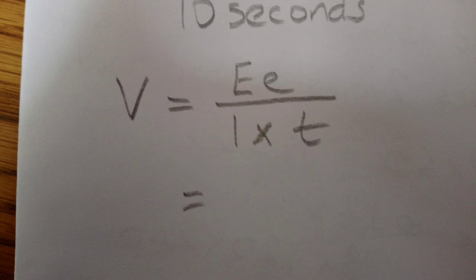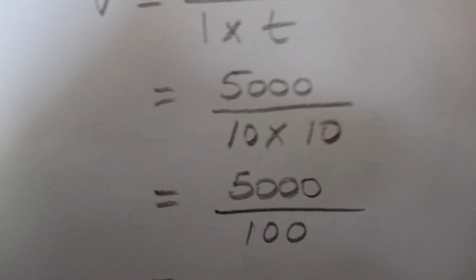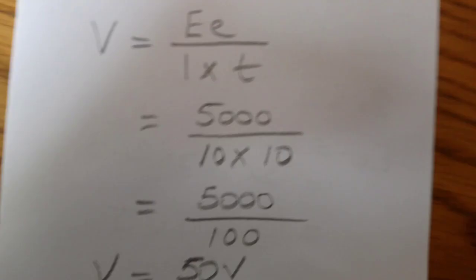It's just a case of putting electrical energy on top and then the current and time below. Again, the time's in seconds here so that's correct. You'll find that the answer is 50 volts and a nice blurry picture to finish with.